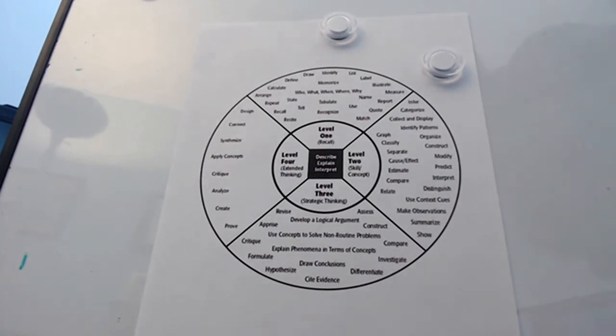So level one, you have things like infer, organize, construct. Level two—oh sorry, those are level two words. Level three words would be revise, appraise, critique. Level four is design, connect, synthesize. But carefully make sure most of those level four words aren't as measurable, and they might be more of a goal kind of thing.